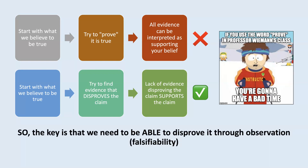So the idea of falsifiability is all about this idea that we need to be able to disprove our claim through observation. So are you able to disprove it? It might be true, and we might not be able to find evidence against it. But falsifiability is the ability to disprove it — are we able to disprove it through observation?